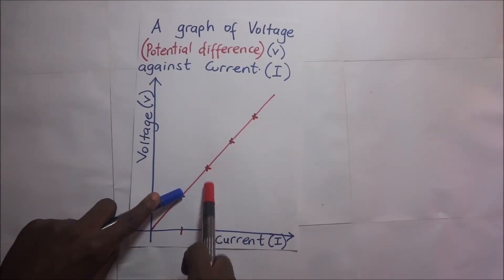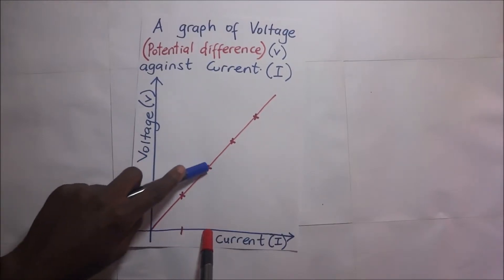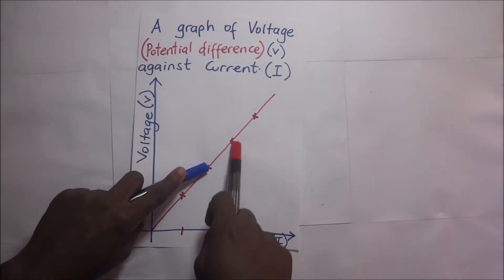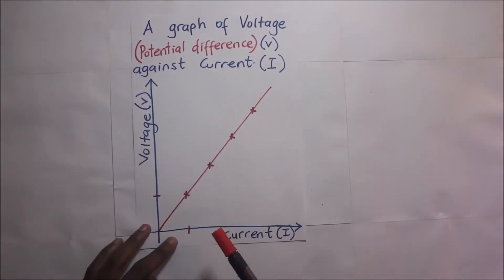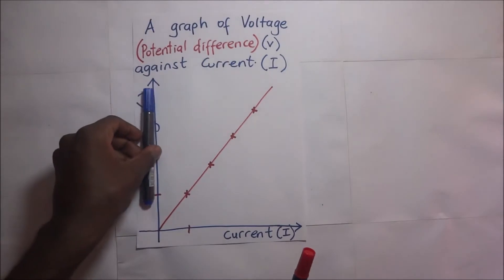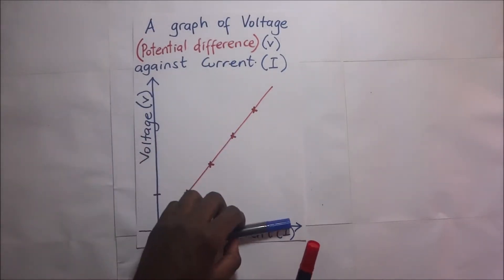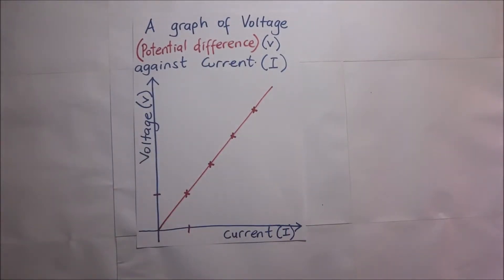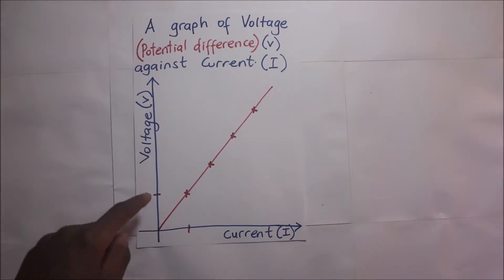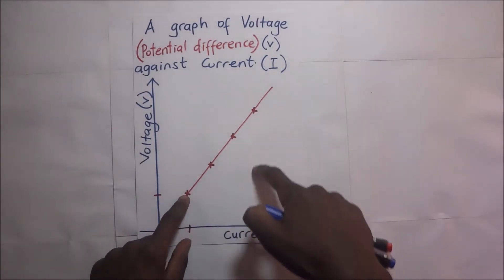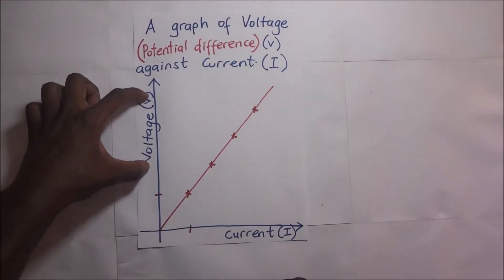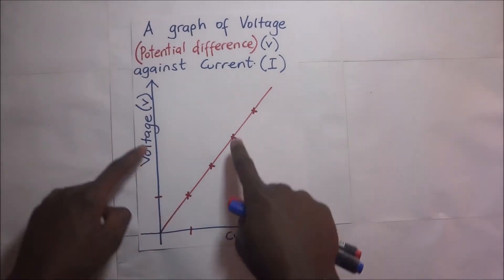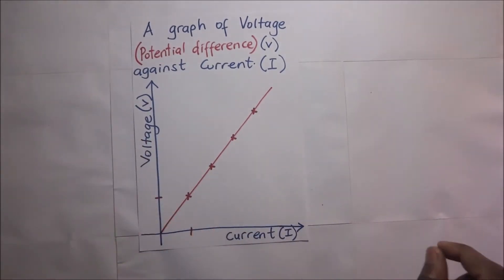When current increases to this level, voltage also increases to that level. When current increases to that amount, voltage also increases to that amount. So from our experiment, we are able to see that voltage is directly proportional to current. If voltage is directly proportional to current, this means that the slope of this graph gives us a constant figure — or that when we get the voltage at each point and divide it by the current, we get a constant.